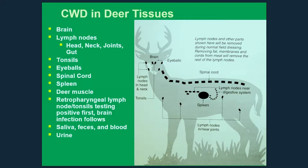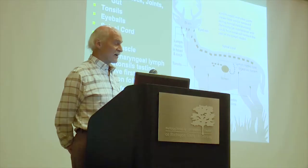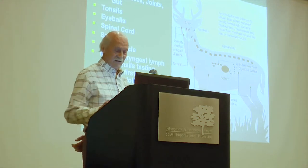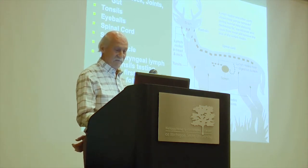Anything that has blood and nervous tissue associated with it is a concern. In particular, things like muscle that might be consumed by humans. This has led to the finding that the agent is being shed by these animals in their saliva, feces, blood, and urine, as Ed described quite well.